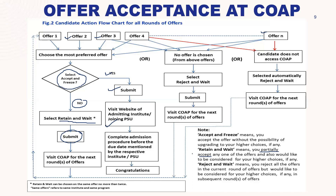To recap: the first option, 'Accept and Freeze,' means you got the offer you desired and you want no further counseling — your counseling is over. You simply visit the institute website or the PSU website for whichever offer you accepted. Acceptance is straightforward — when you get your desired offer, you use it. Retain and wait, on the other hand, has to be applied very carefully.